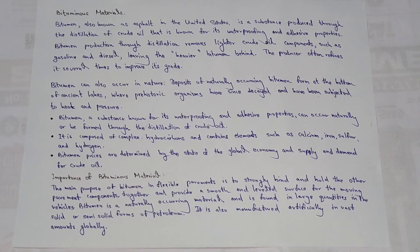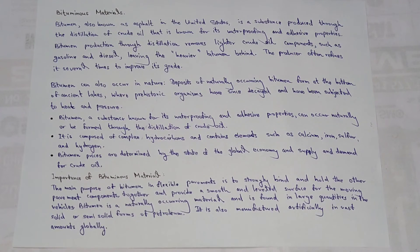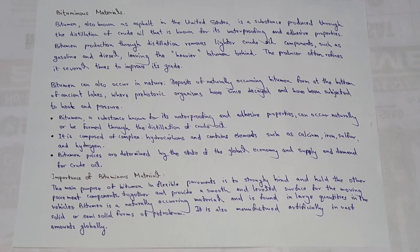Bitumen is a naturally occurring material found in large quantities in the solid or semi-solid forms of petroleum. There are several states — it can be in solid state or semi-solid form. It is also manufactured artificially in vast amounts globally.